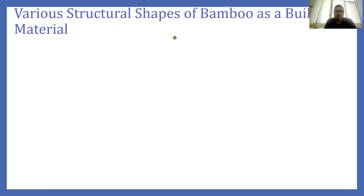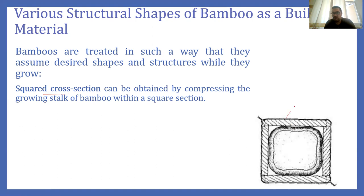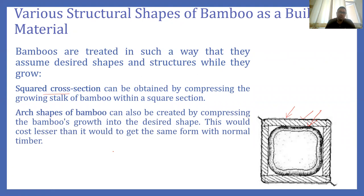Bamboo can be converted into various shapes if we do proper detailing. Bamboo can be of squared cross section — if during its growth we place it within a square pipe, it can attain the shape of a square. Similarly, if we want a bent shape, by bending bamboo in the desired shape at a young age, it can attain an arch shape or any desired form.